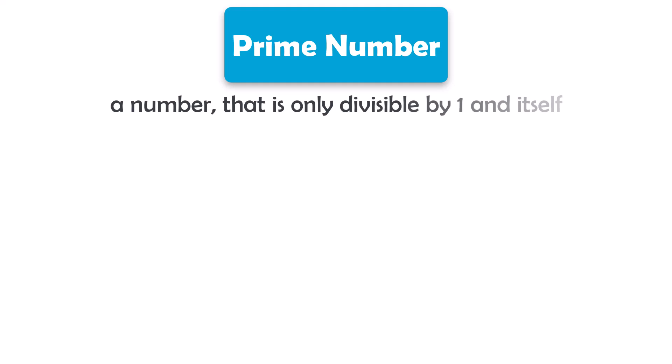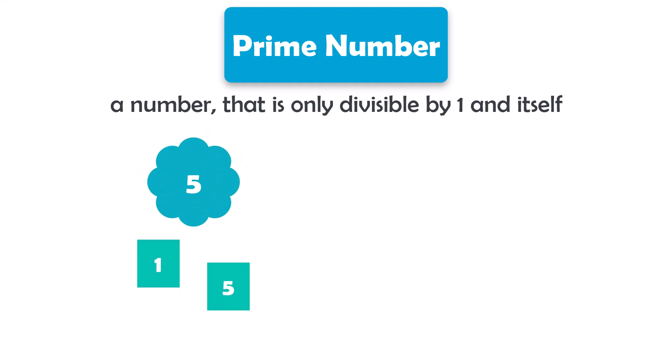What is a prime number? A prime number is a number that is only divisible by 1 and itself. In other words, a prime number has exactly two positive divisors: 1 and the number itself. For example, the number 5 is a prime number, as it can only be divided evenly by 1 and 5.